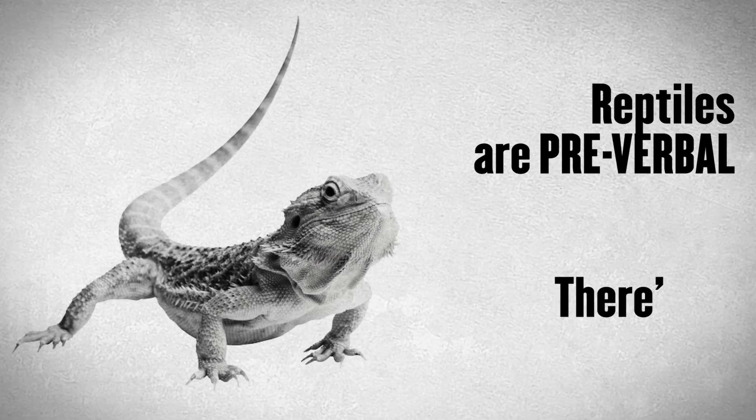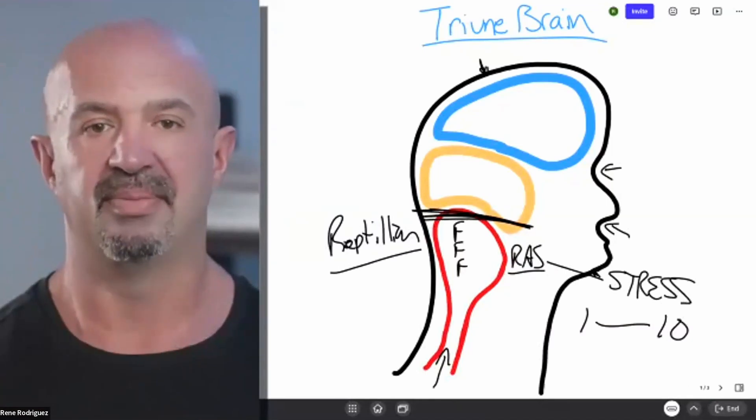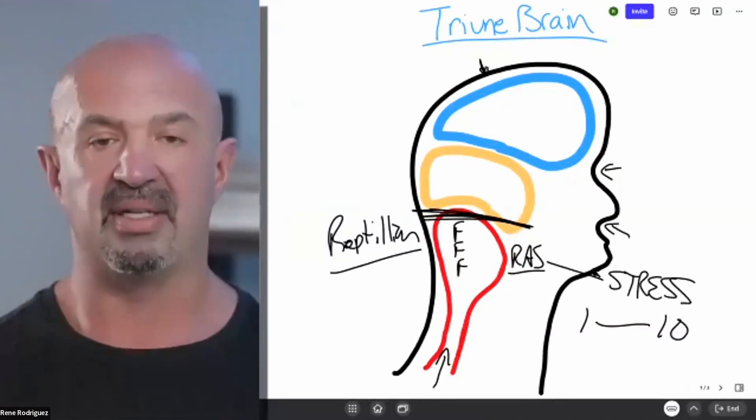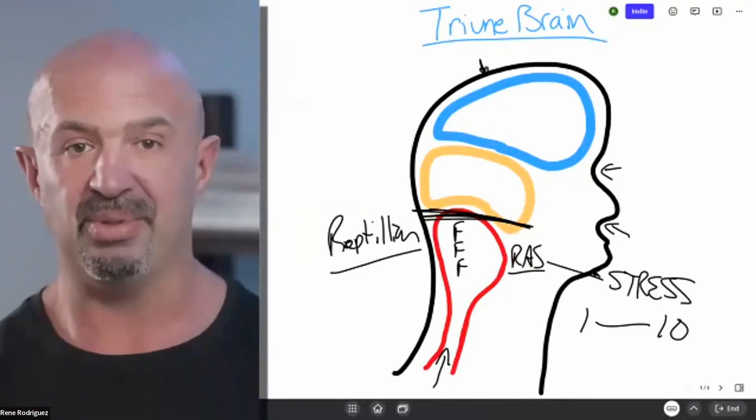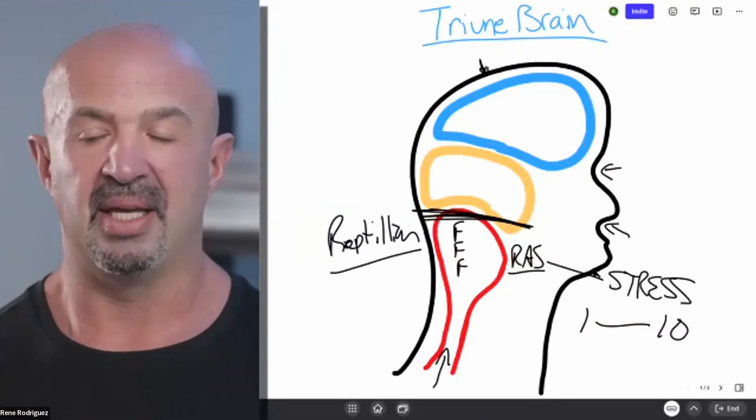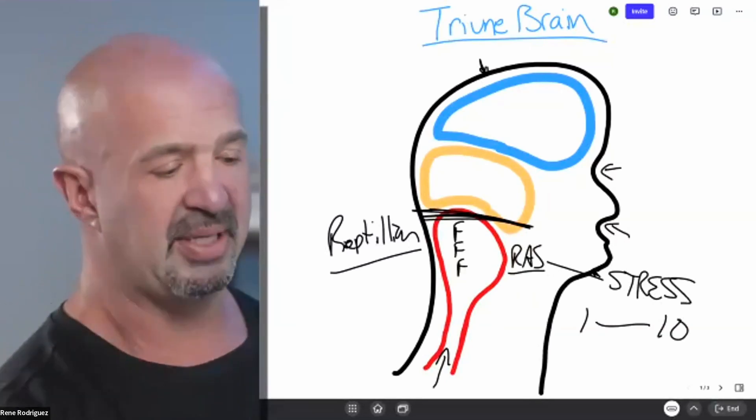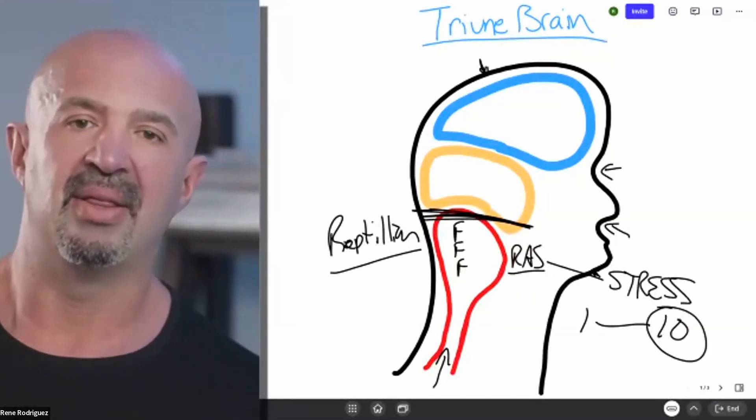The reptilian brain, they call it reptilian because reptiles have this brain. Reptiles are pre-verbal. There's no language centers. There's no bonding. Have you ever seen reptiles bond? No, they work individually. But if they were working as teams, that'd be scary. They don't have connections. They don't have the ability to care. So when we are under this level ten stress, we take on a lot of those same attributes.